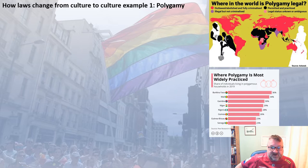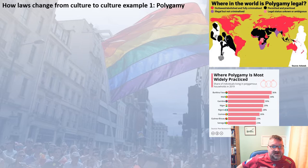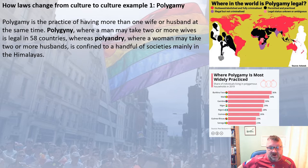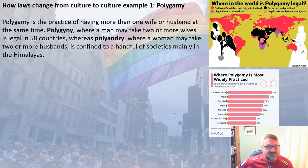We often get exam questions on how laws change from culture to culture, so let's look at some specific examples you can use. The first is polygamy — the practice of having more than one wife or husband at the same time. Polygyny, where a man may take two or more wives, is legal in 58 countries, whereas polyandry, where a woman takes two or more husbands, is confined to a handful of societies mainly in the Himalayas.